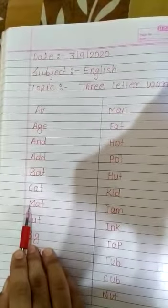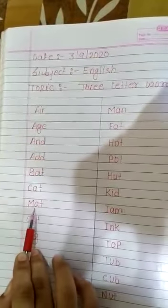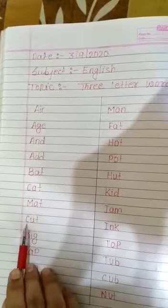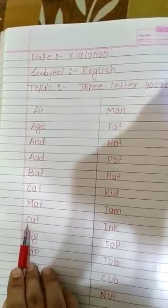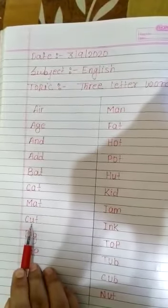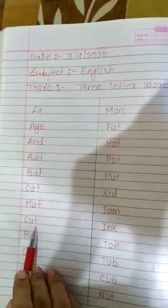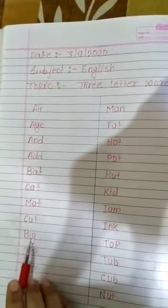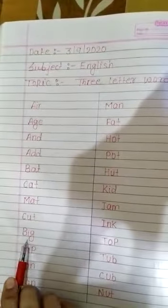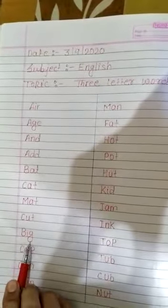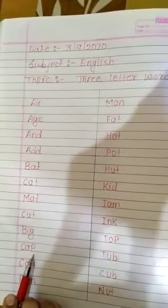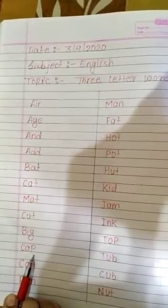M, A, T. मैट. C, U, T. कट. B, I, G. बिग. C, A, P. कैप.